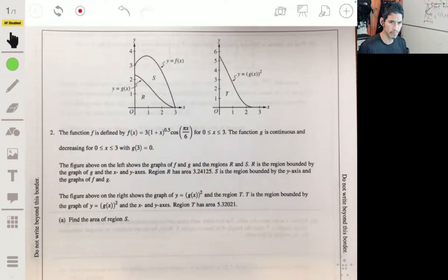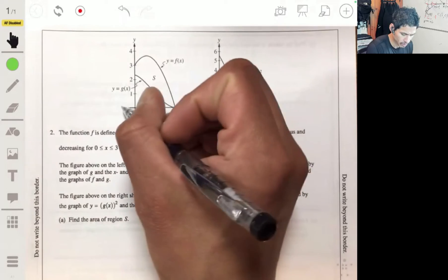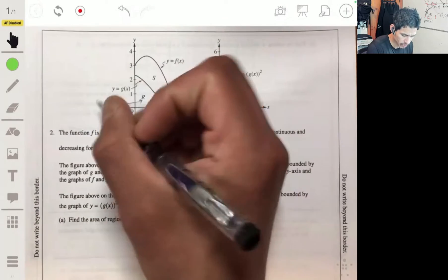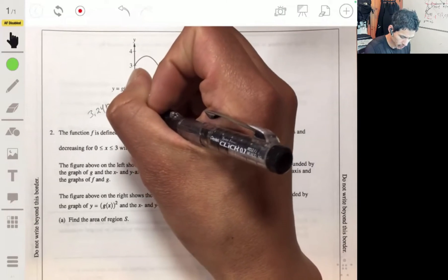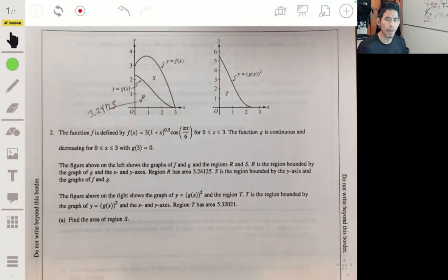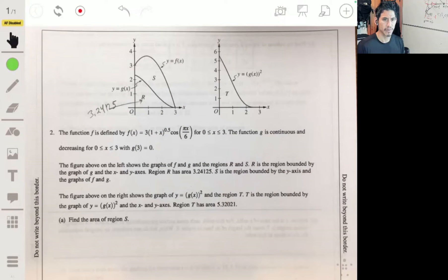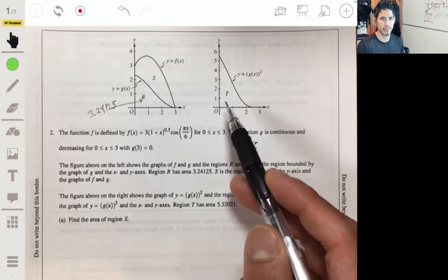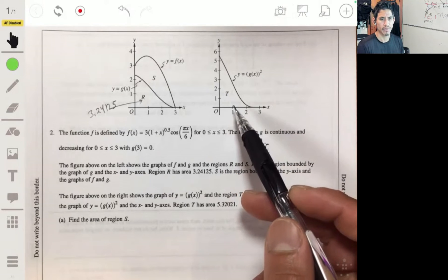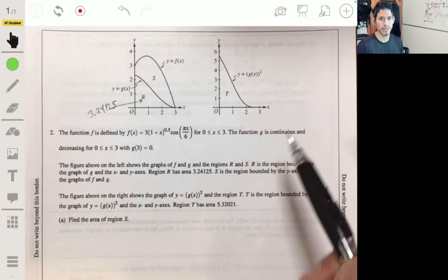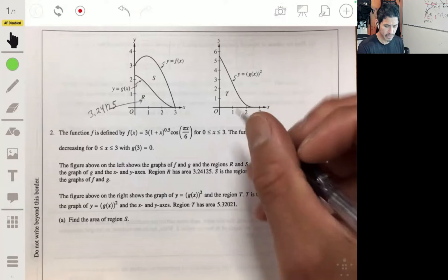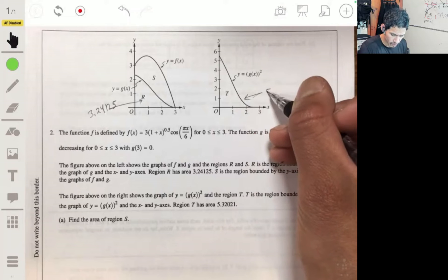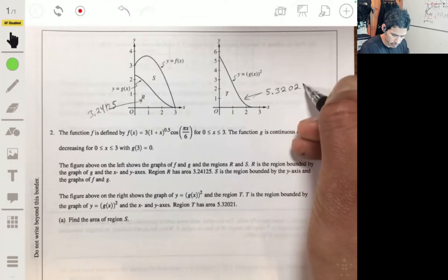Function g is continuous and decreasing for values of x from 0 to 3, and g(3) = 0. The figure above on the left shows the graphs of f and g and the regions R and S. R is the region bounded by g(x) and the x and y axes. Region R has an area of 3.24125. S is bounded by the y-axis and the graphs of f and g. On the right here we have the graph of g(x) squared and the region T bounded by the x and y axes, which has an area of 5.32021.